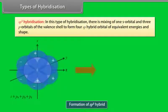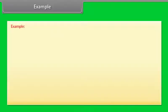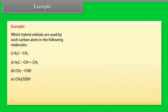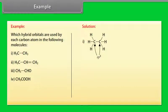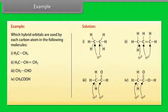In SP3 hybridization, there is mixing of one S-orbital and three P-orbitals of the valence shell to form four SP3 hybrid orbitals of equivalent energies and shape. For example, in the given molecules, carbon atoms use SP2 and SP3 hybridization.